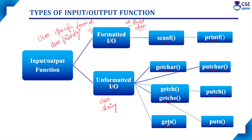The gets function is used to read a sequence of characters from the keyboard, including spaces, and store them in a memory location — essentially it accepts a string as input. The puts function displays the sequence of characters, that is the string, stored in the memory location onto the output screen.